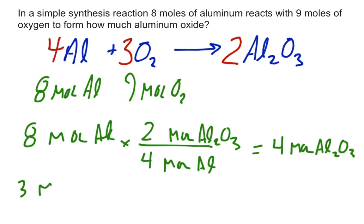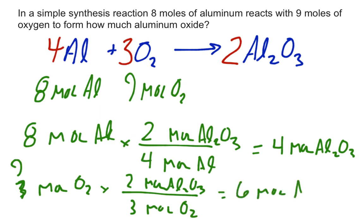Perform the same stoichiometry problem with oxygen. I'm sorry, that should be a nine. Three moles of Al2O3 on bottom. Two moles of Al2O3 on top. Nine times two is 18 divided by three is six moles of Al2O3.